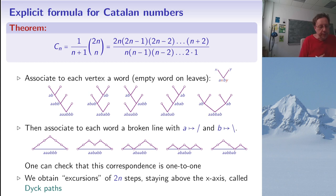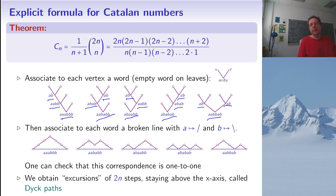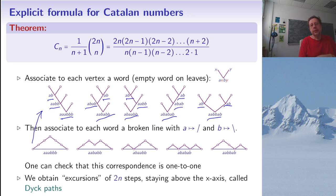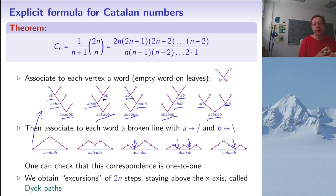The claim is that for every binary tree we get a word, and for every word we get a Dyck path: excursions of 2n steps that start and end on the x-axis without going below it. This is a one-to-one correspondence. To prove every binary tree gives a Dyck path, one uses induction. To reconstruct a tree from a Dyck path, one notices that some paths can be split into shorter Dyck paths, which gives the structure needed to recover the tree.